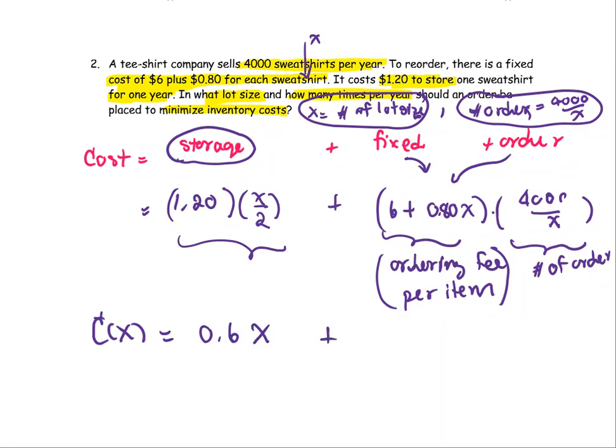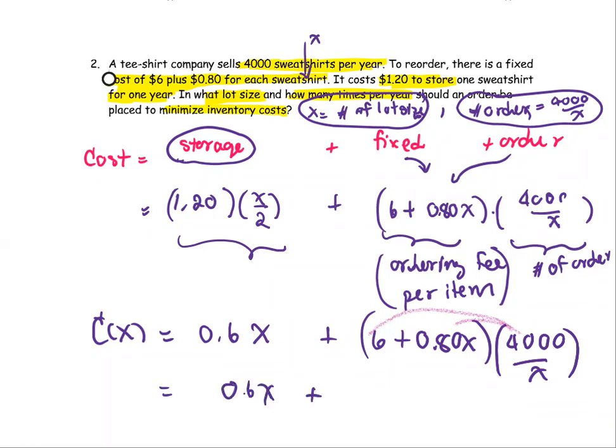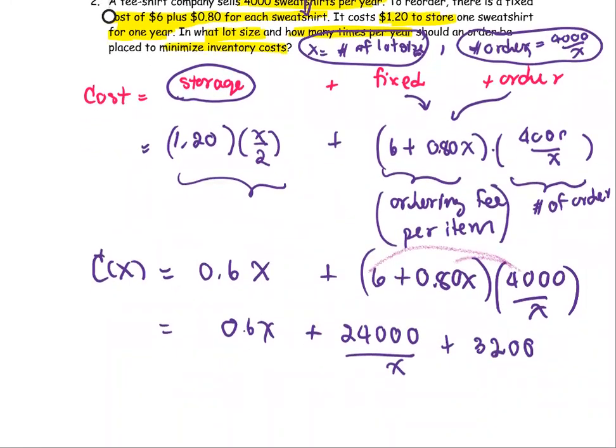The next part is the quantity 4,000 over X multiplied by 6 plus 0.80 times X. Multiplying 4,000 over X to each term and simplifying the algebra: 6 times 4,000 is 24,000 divided by X, plus 0.8X times 1 over X times 4,000. That's 32, plus 2 more zeros, or 3,200, and the X terms cancel. Now we have three pieces as the cost function.